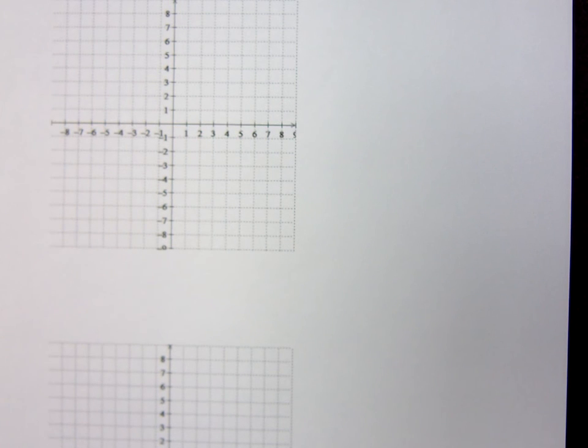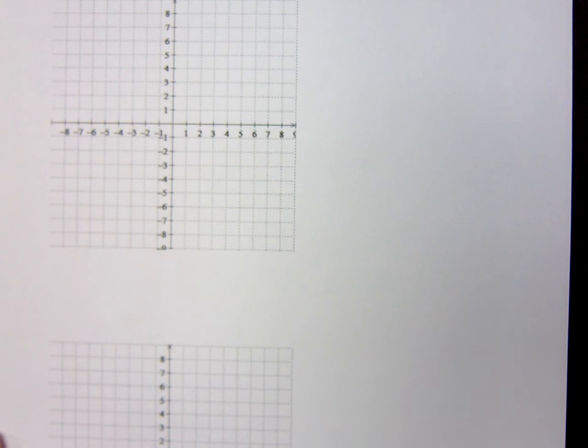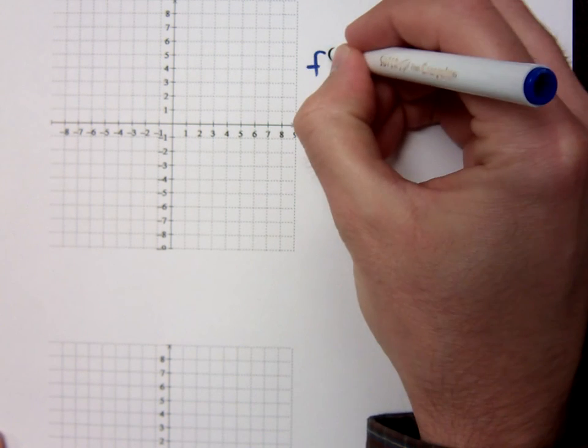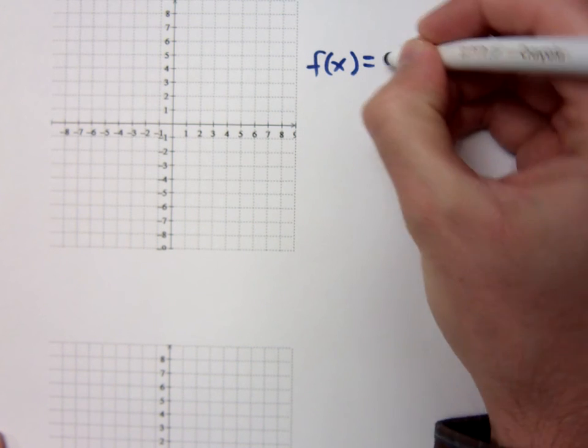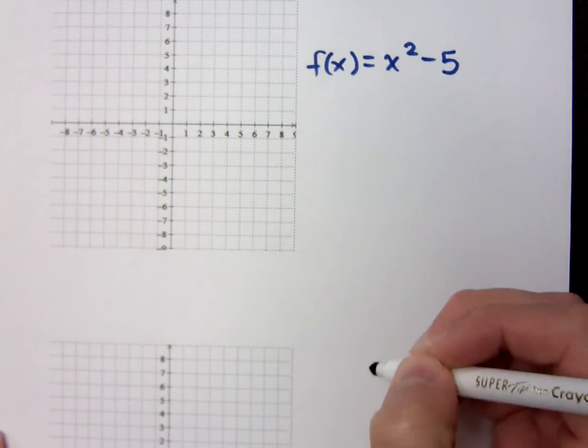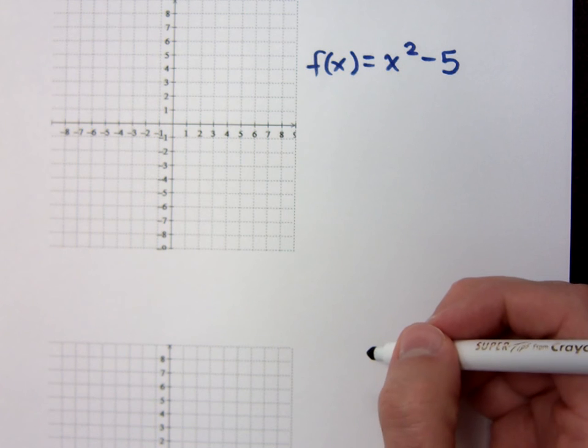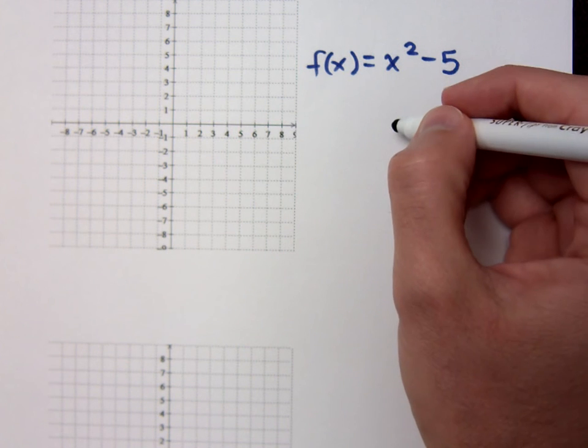Okay, so we were just talking about graphing techniques. We had talked about vertical translations or vertical shifts. When I had the function x squared minus 5, and any time we write these functions down, you need to list every single thing you know about it, anything you can tell me. First, you start with the shape. What kind of shape do we have here?